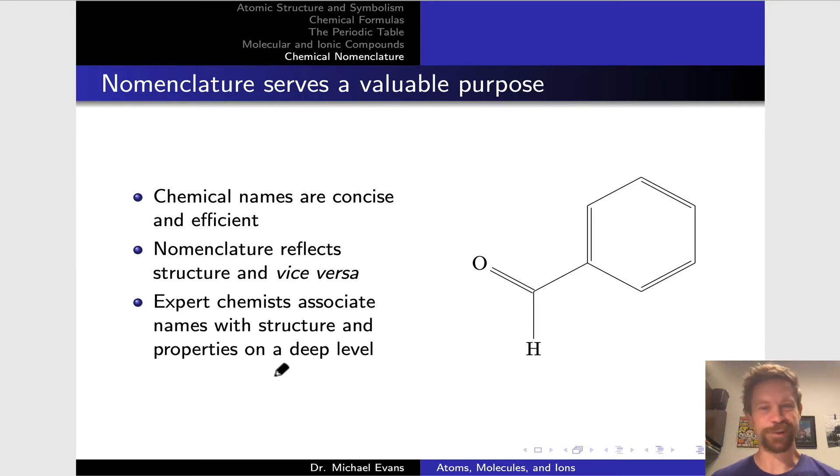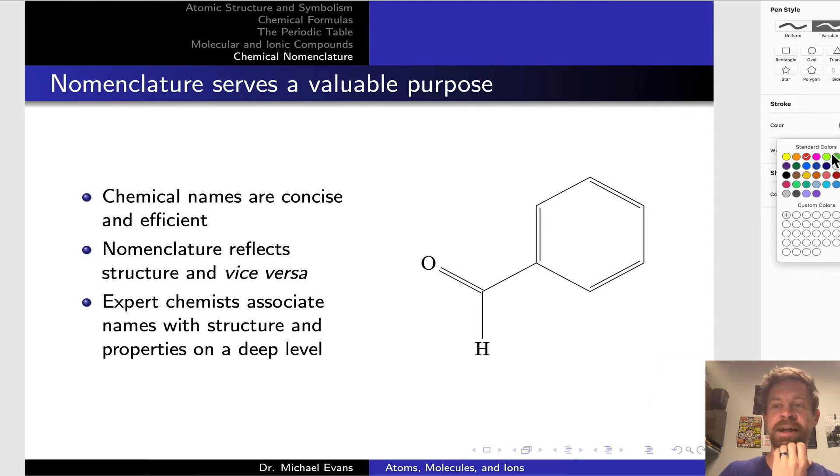Nomenclature is a touchy subject for students at times because there's a lot of information here to know, and it's a lot of systematic, algorithmic, this is how we do things type stuff. There is a reason for that, and the purpose of this slide is to try to impart on you what some of those reasons are. Nomenclature does serve some valuable purposes. And to highlight that, I wanted to bring up this molecule right here. Now, this molecule has a systematic name.